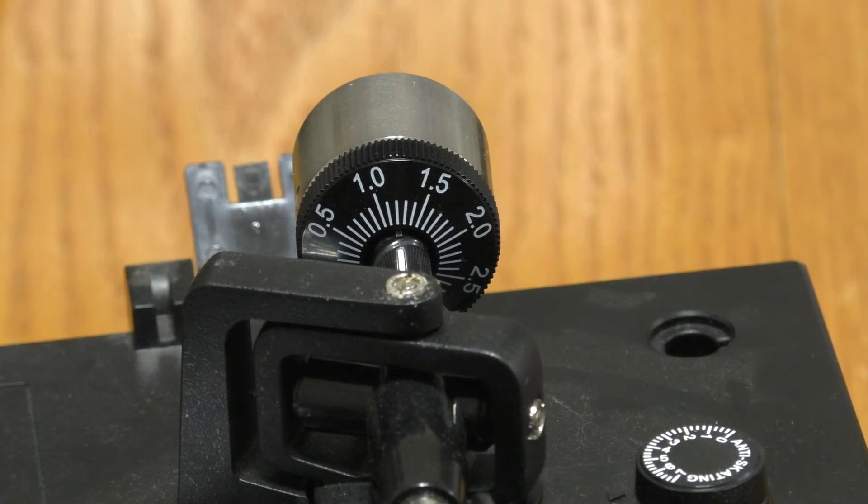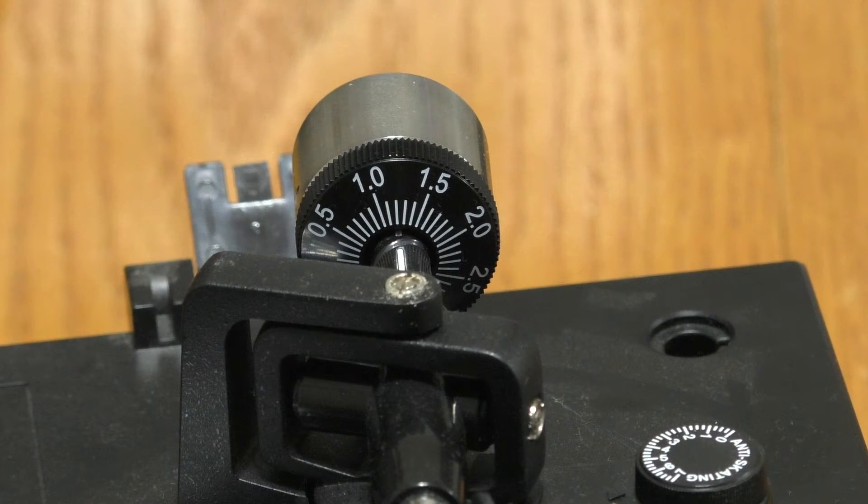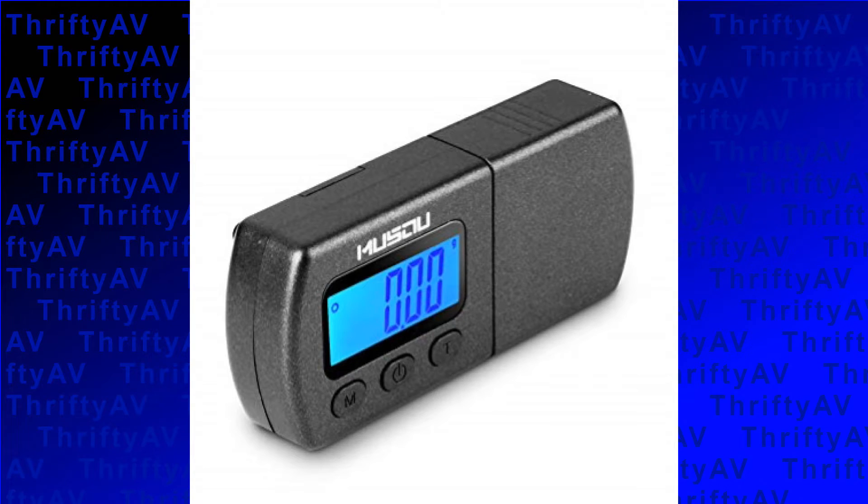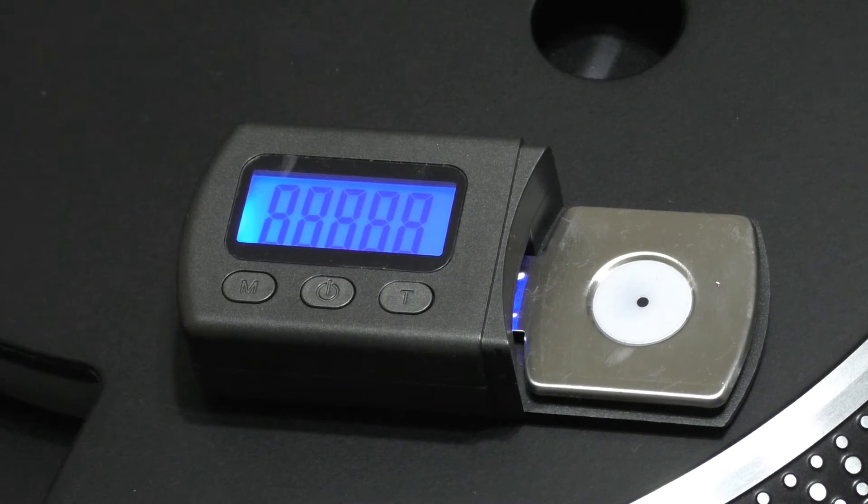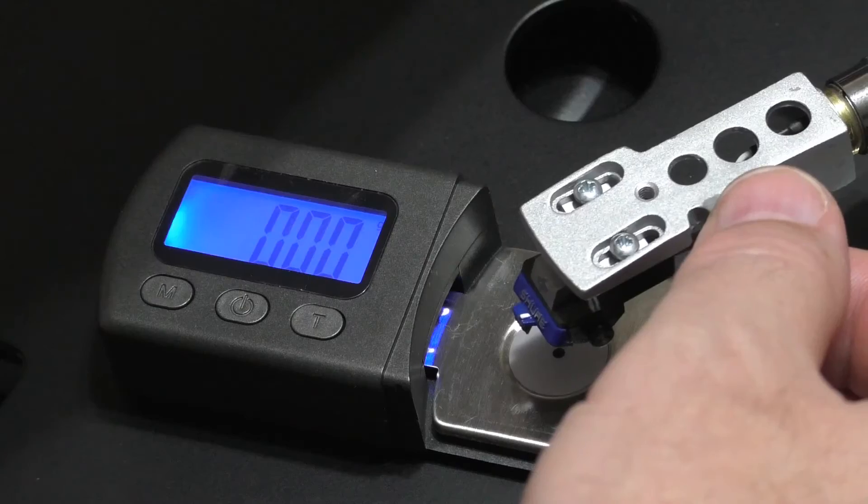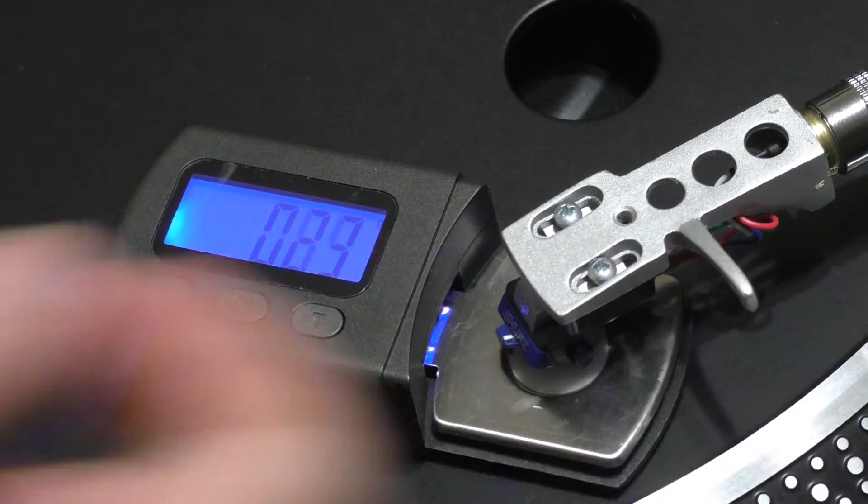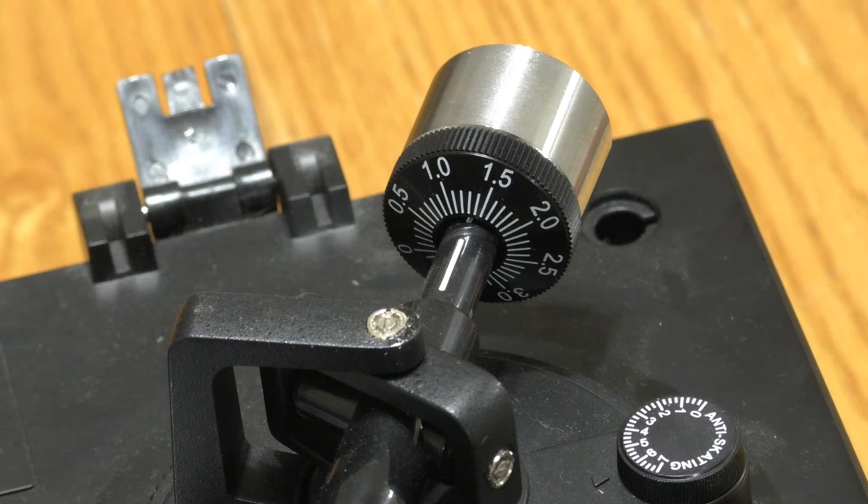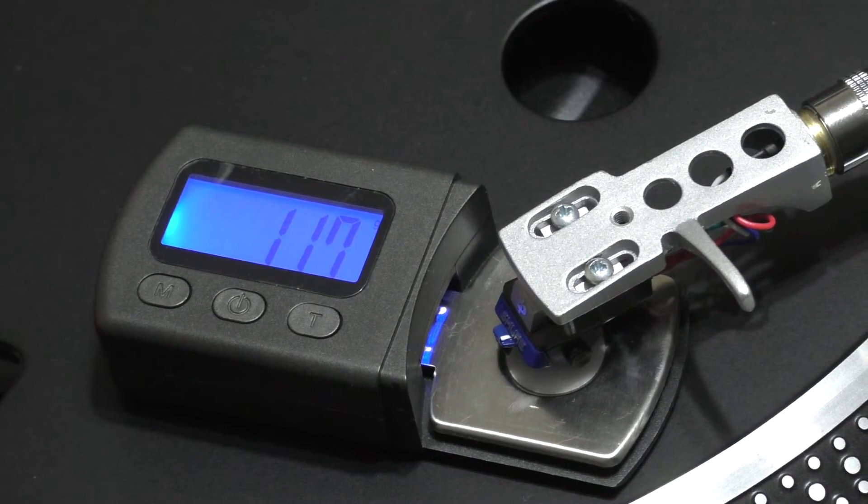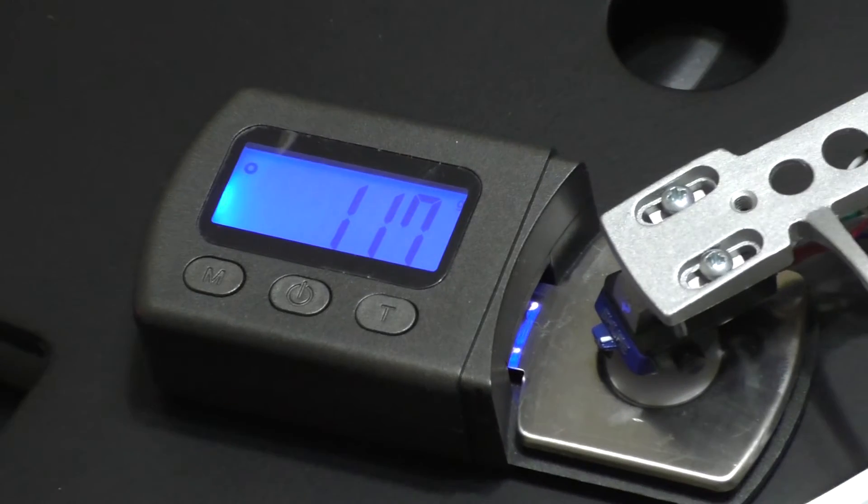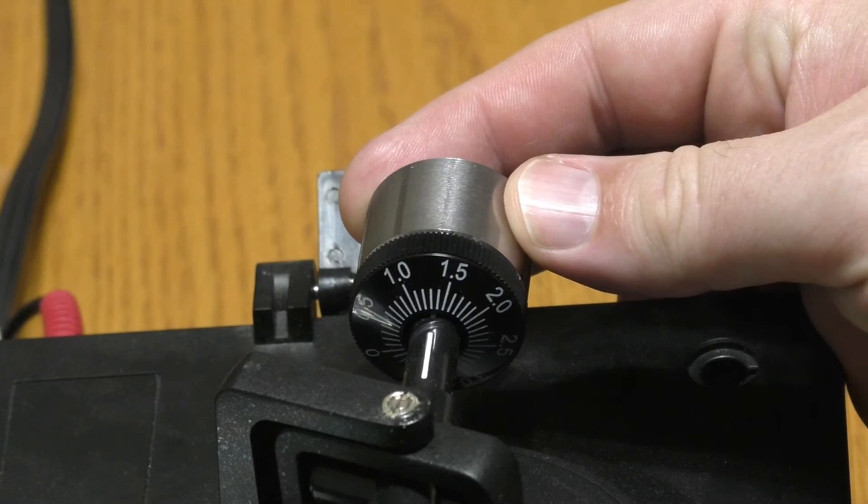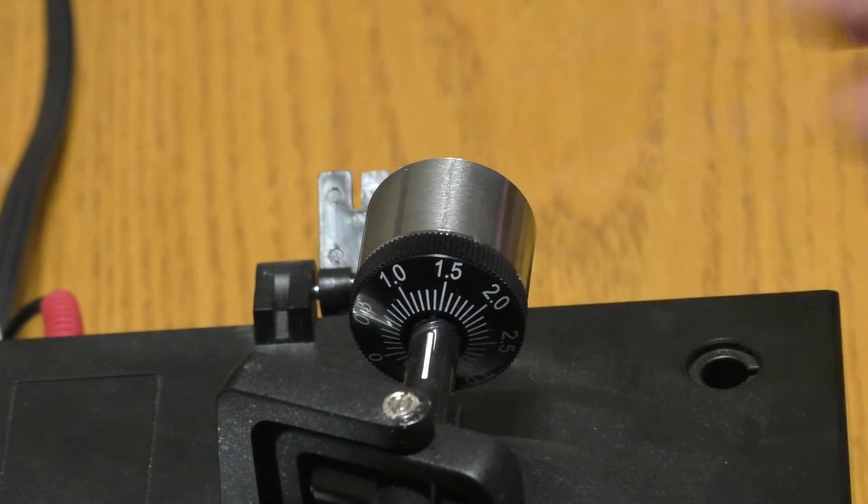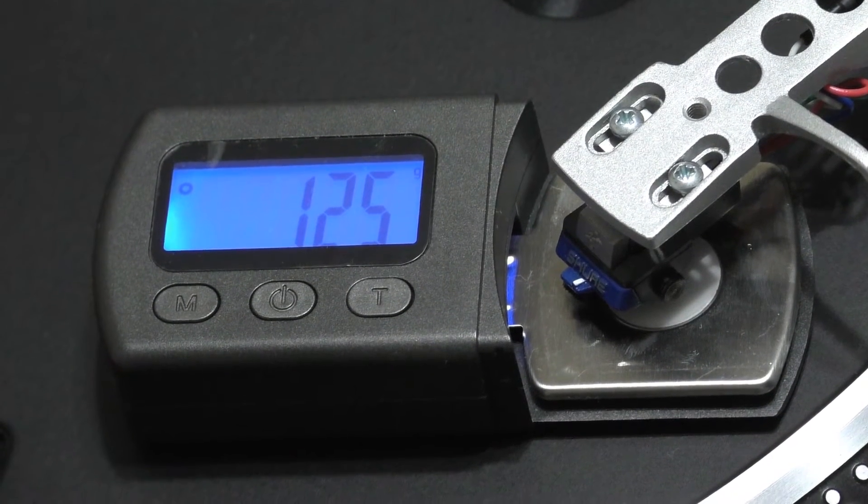However, these counterweights are not always accurate. To ensure that you have the desired tracking force, you can purchase a scale that accurately measures the force. Zero out the scale with no weight on it, then place the needle on the scale. As you see, my counterweight is set to about 1.25, but when I place the needle on the scale, it reads 1.17. I then adjust the counterweight until I get 1.25 on my scale.